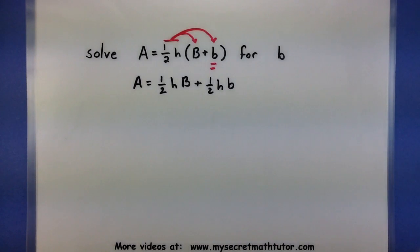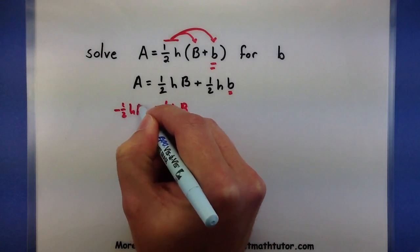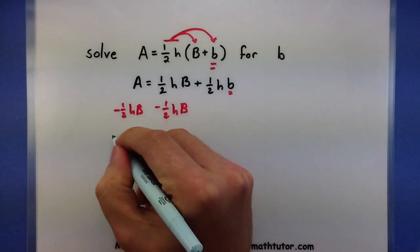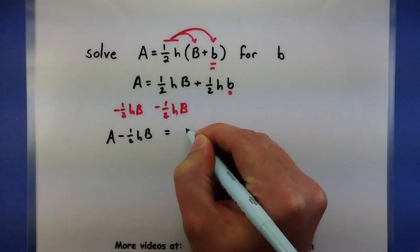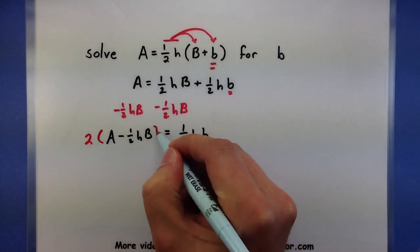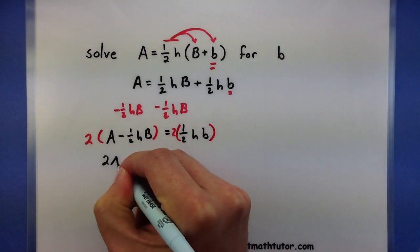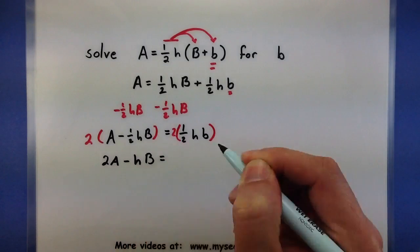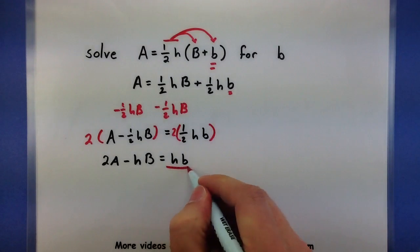That gets me pretty far. Now we want to work to get this b all alone by shifting things to the other side. Let's go ahead and subtract one-half hb from both sides. To get rid of that one-half, I'll multiply both sides by 2. And then we're almost all the way done — let's go ahead and divide both sides by h.